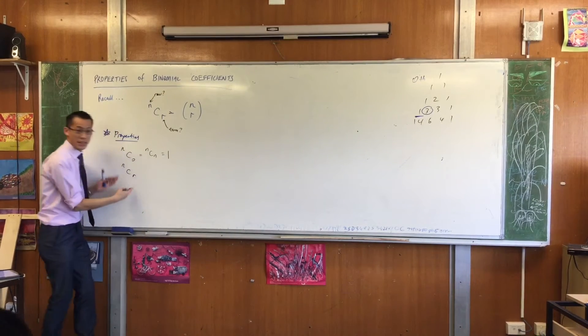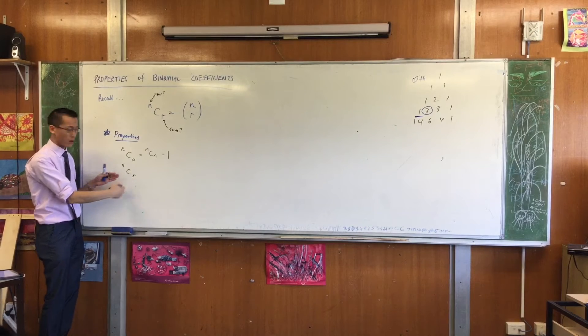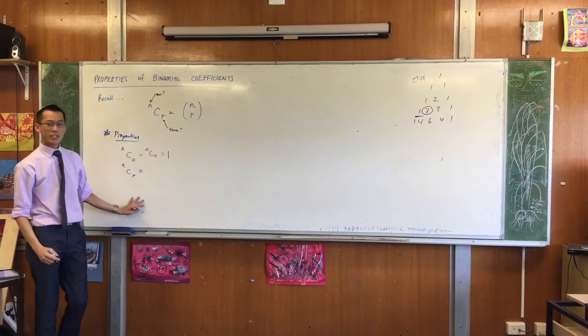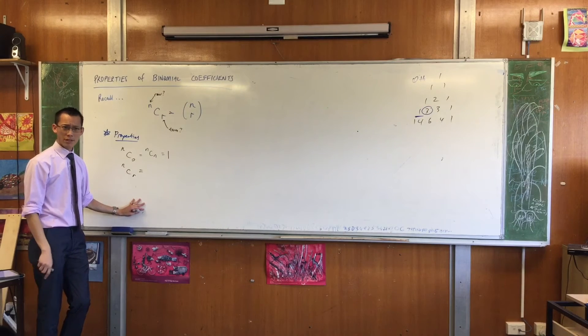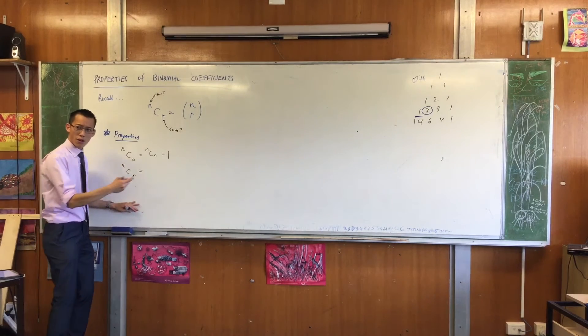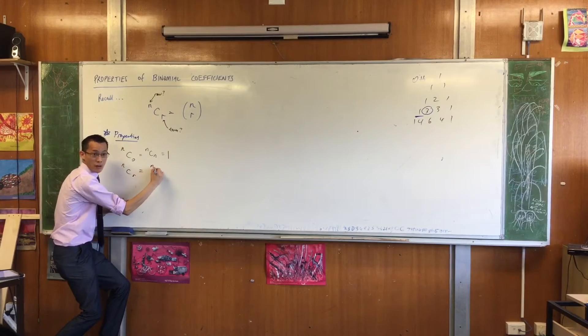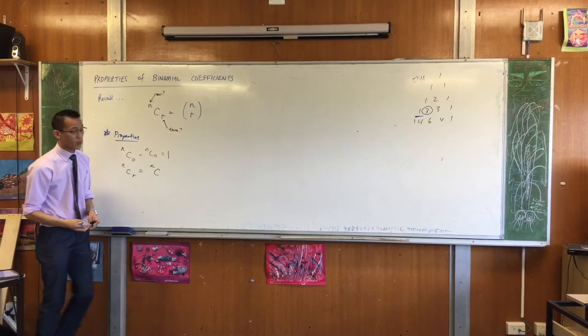So nCr, this could be any term in the row, right? It's going to be equal to some other term in the same row. Do you agree with that? So if I'm in the same row, that's the nth row. Okay, now let's have a look at an example.